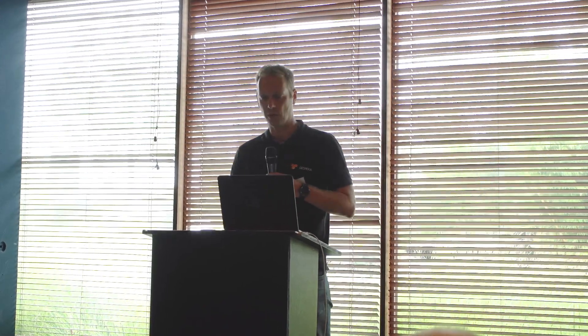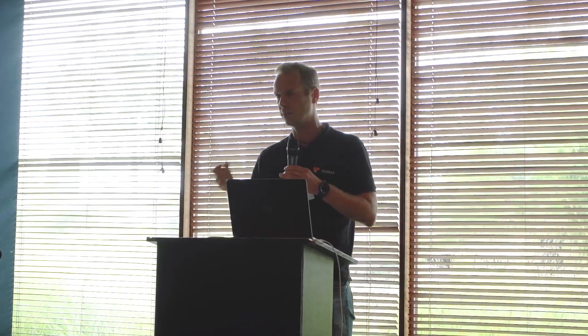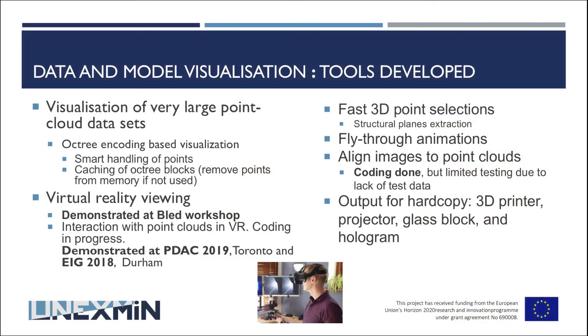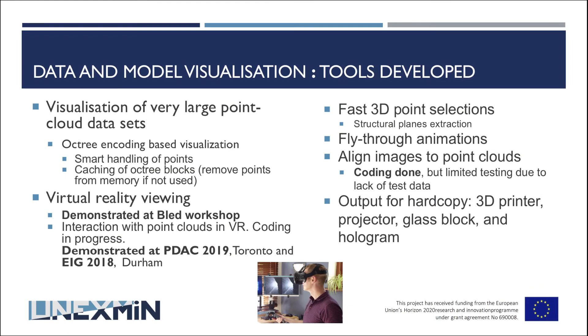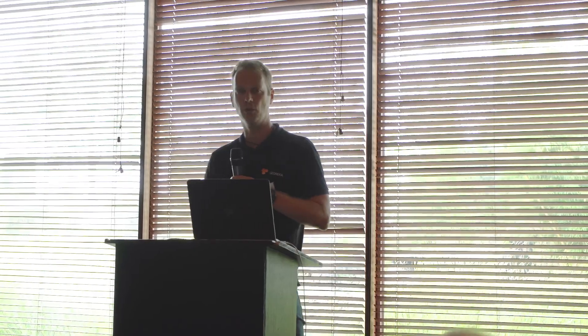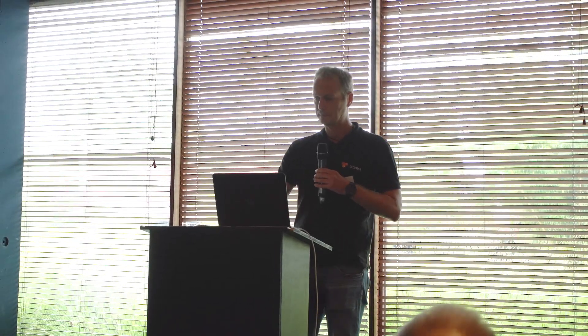Another part is structural planes within the data. We needed to deal with these as a point cloud and extract structural information. We're using the same subdivision of space to extract structural planes from the data quite quickly. We're also doing fly-through animation. One of the things we want to do is to associate all the geological information we can get with these point clouds — projecting images from optical cameras, UV cameras, mobile cameras, and multi-spectral back onto the point cloud, so you can switch between different colour information. Finally, we've had a look at what output could be useful: 3D printing, glass boxes, and holographs.